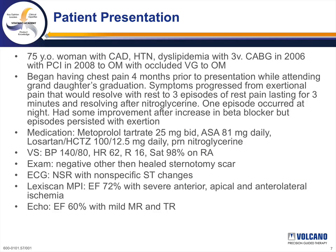Next, I'd like to present a challenging case in which intravascular ultrasound was critical to making decisions on intervention. The patient is a 75-year-old female with known coronary artery disease who had a three-vessel bypass in 2006, with hypertension and dyslipidemia. She had a previous coronary intervention in 2008 to an obtuse marginal branch and had a known occluded vein graft to the obtuse marginal branch. She began having chest pain about four months prior to presenting, progressing from exertional pain to three episodes of rest pain, each lasting about three minutes and resolving after a single sublingual nitroglycerin.